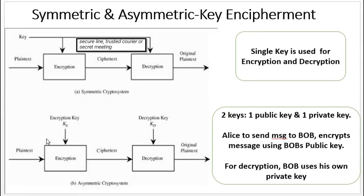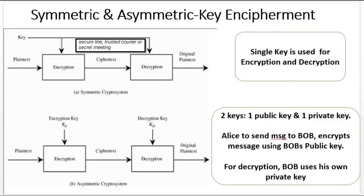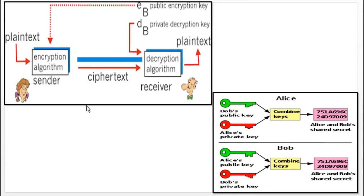In the case of asymmetric key encipherment, the technique is done using two keys — one is the public key and the other is the private key. The sender uses its private key and the receiver's public key to encode the data, whereas the receiver uses its private key and the sender's public key to decode the data and get the original plaintext. These keys and the plaintext undergo an encryption algorithm to get the ciphertext, whereas at the receiver end, the ciphertext and the keys undergo a decryption algorithm to get the plaintext.